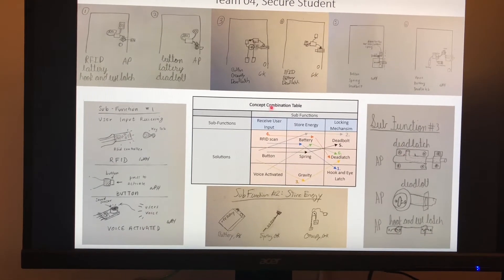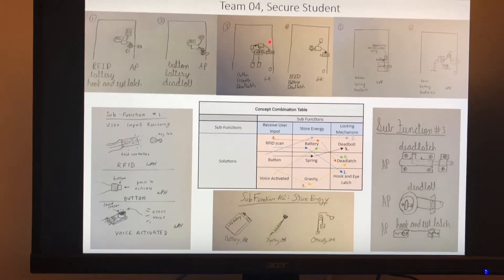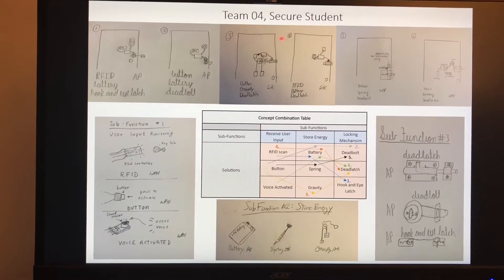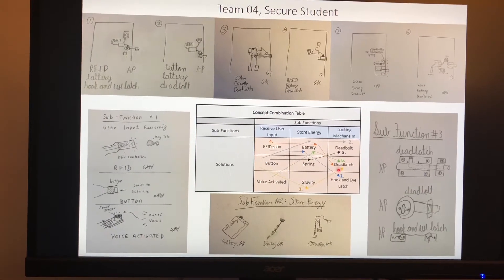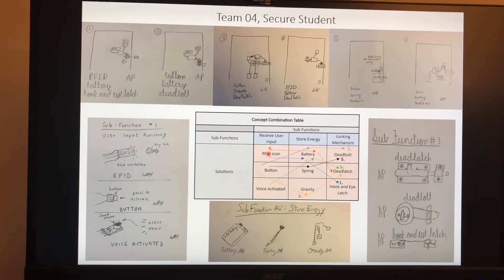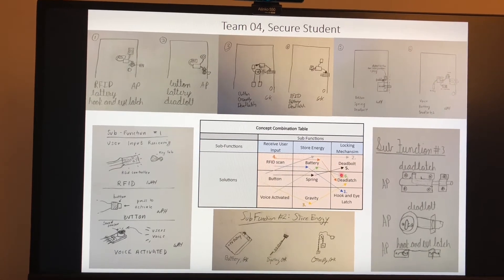So after that, we broke them up into different plausible solutions, and the two that I ended up choosing were 3 and 4, which can be seen as yellow here, which is the button, gravity, and deadlatch, and number 4, which is the orange for RFID scan, battery, and deadlatch.